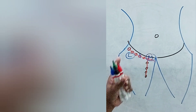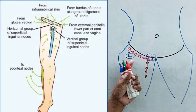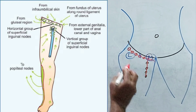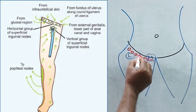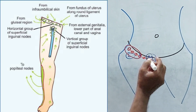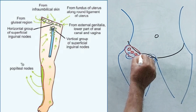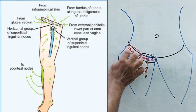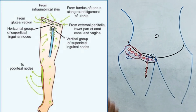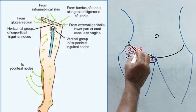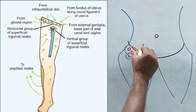The drainage area of these lymph nodes is very important from a clinical point of view. If you consider the lateral group and the medial group, we must know the drainage area of each. There is a line of junction between them.